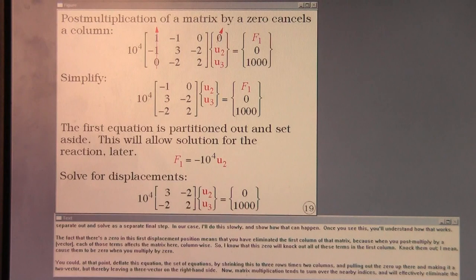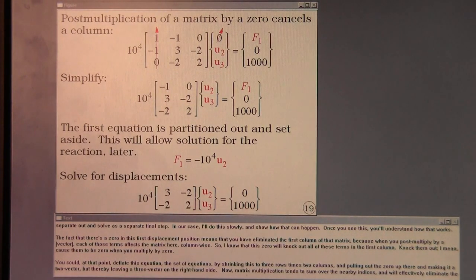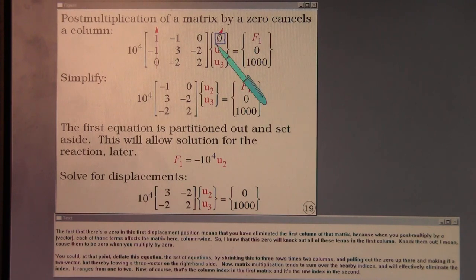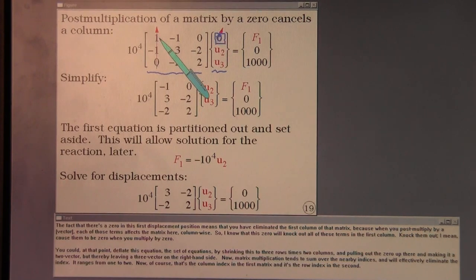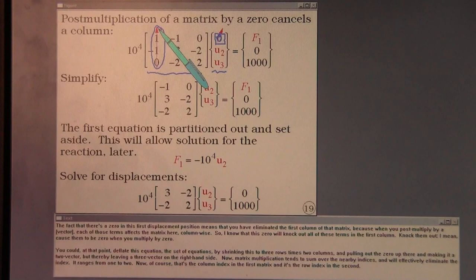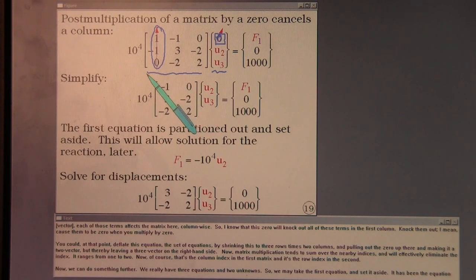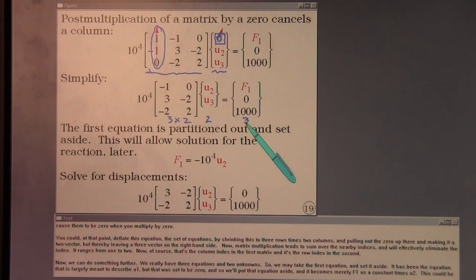In our case, I'll do this slowly and show how that can happen. Once you see this, you'll understand how that works. The fact that there's a zero in this first displacement position means that you have eliminated the first column of that matrix because when you post-multiply by a matrix, each of those terms affects the matrix column-wise. So I know that this zero will knock out all of these terms in the first column—knock them out, I mean, cause them to be zero when you multiply by zero. You could, at that point, deflate this equation by shrinking this to three rows times two columns and pulling out the zero up there and making it a two-vector, but thereby leaving a three-vector on the right-hand side.